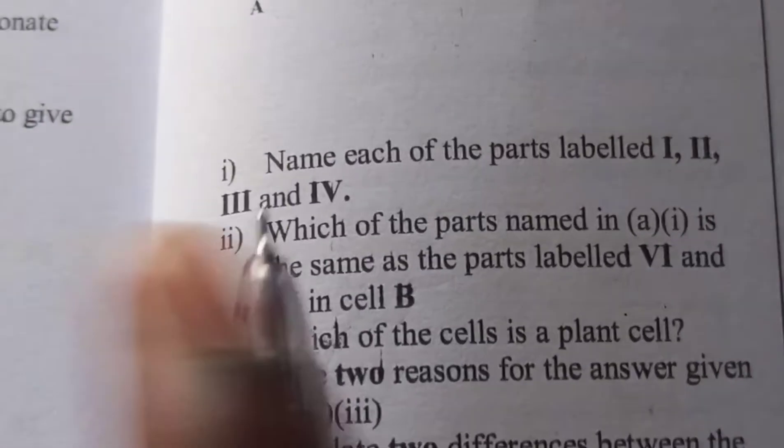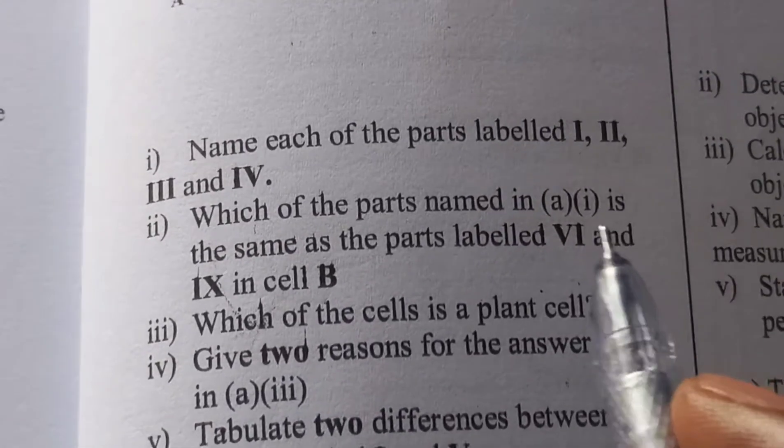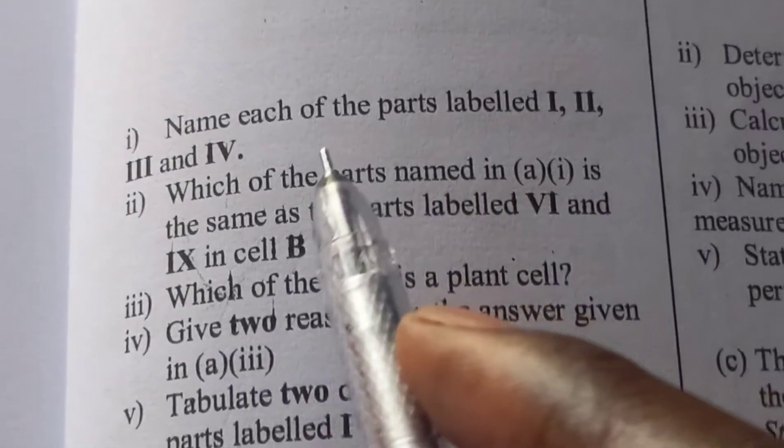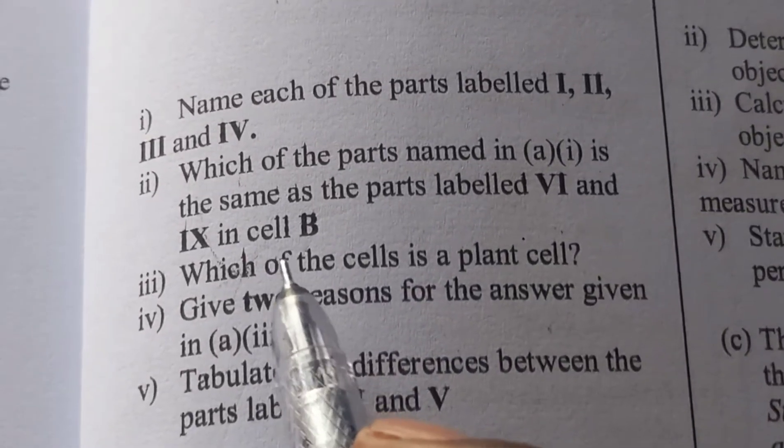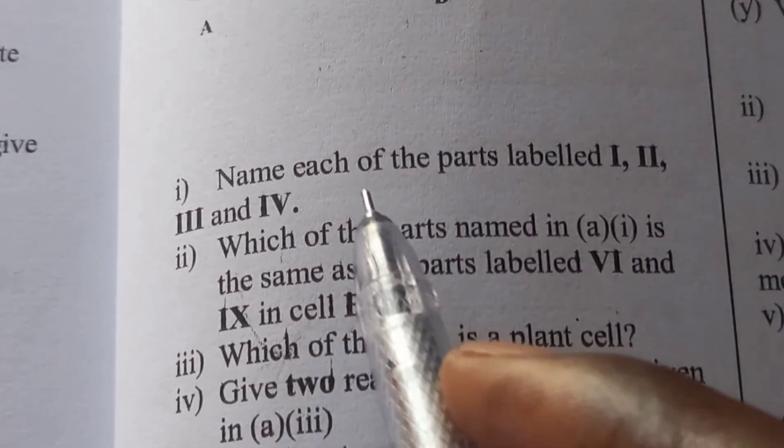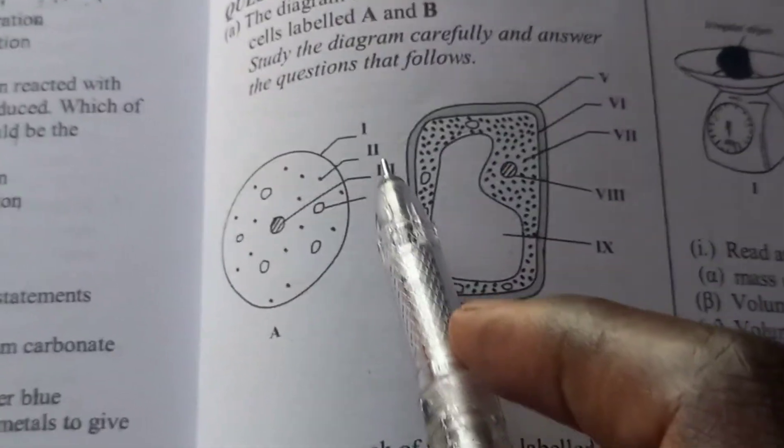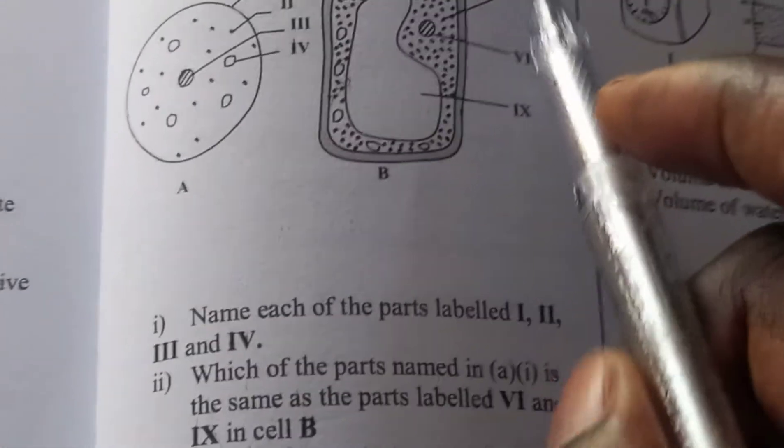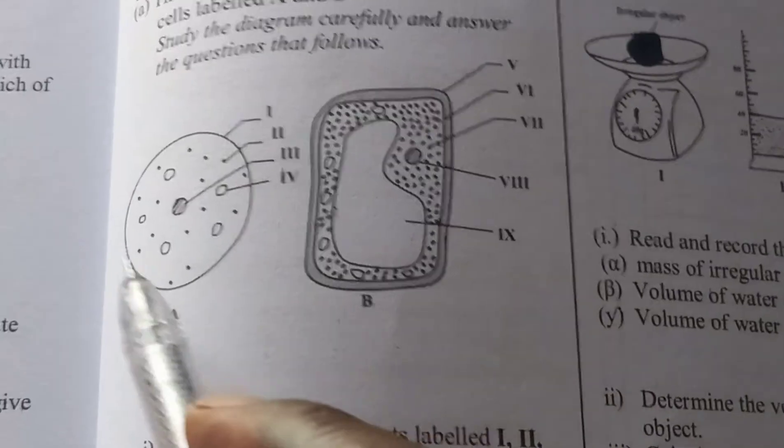What about 1a(ii)? It says which of the parts named in 1a(i) is the same as the part labeled VI and IX in cell B? You just have to look at the parts that you labeled I, II, III, and IV and find the corresponding ones.